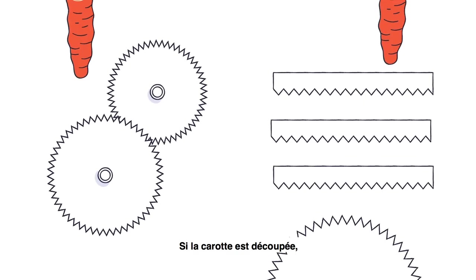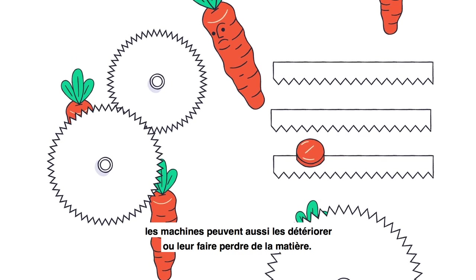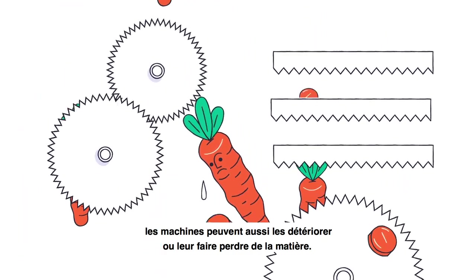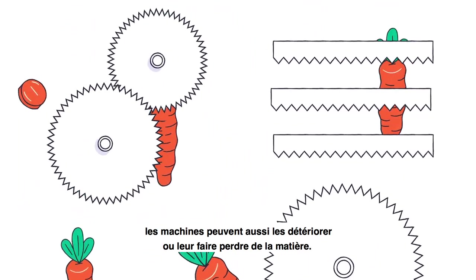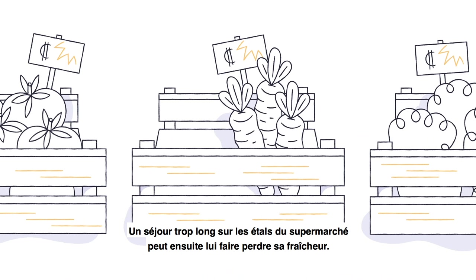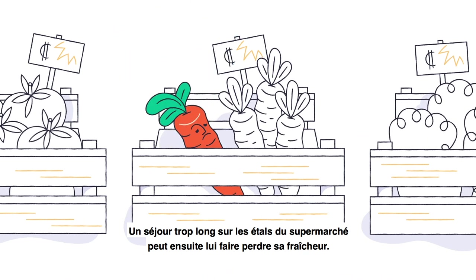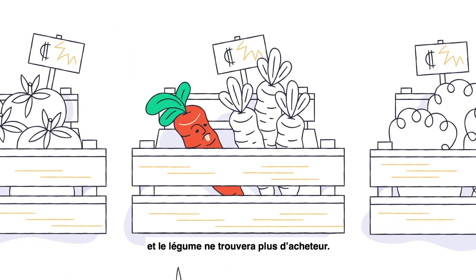If the carrot is cut or canned, machines can also damage it or lead to a loss of material. If it sits too long on the supermarket shelf, the vegetable will lose its freshness and won't find a buyer.